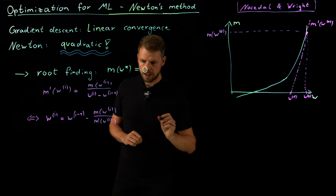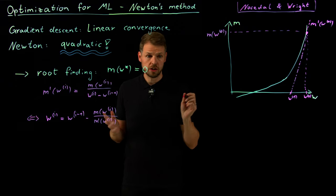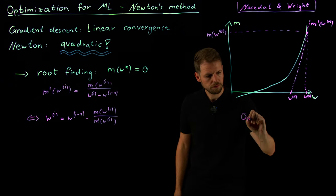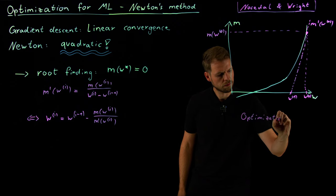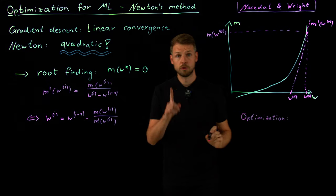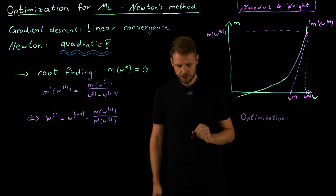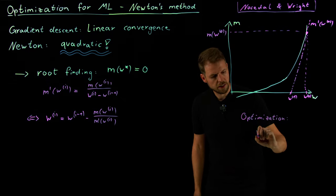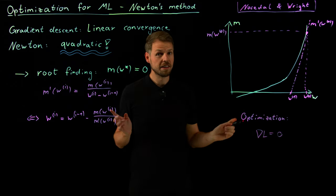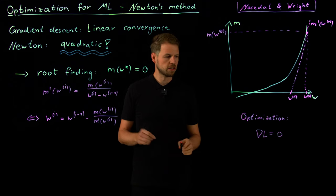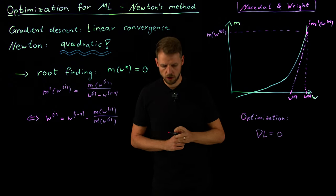So what does root finding have to do with optimization? What we want to find is not the root of the function. What we want to find is the root of the gradient. So in fact, it is a root finding problem, but not for the function itself, the loss function, but for the gradient of the loss function.